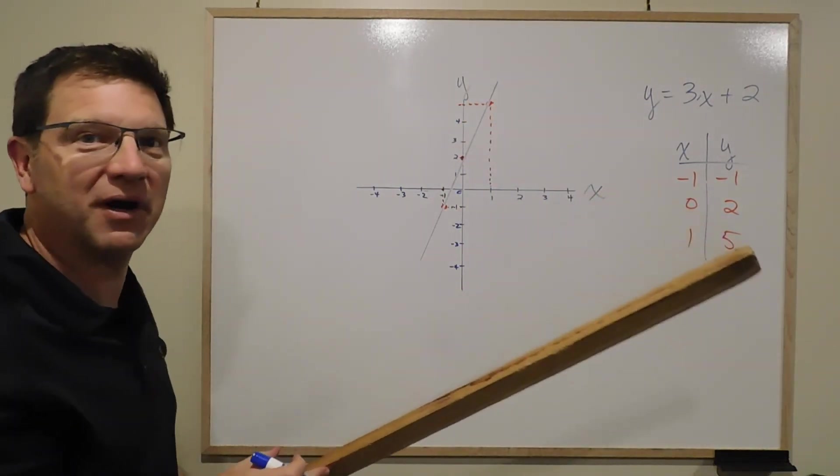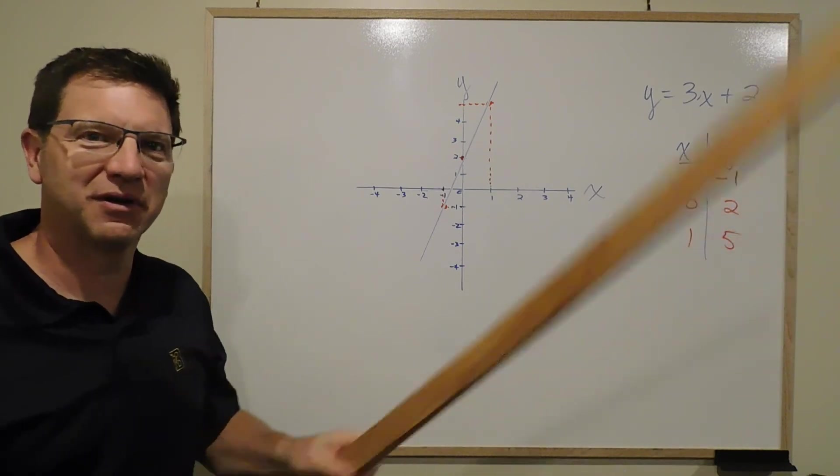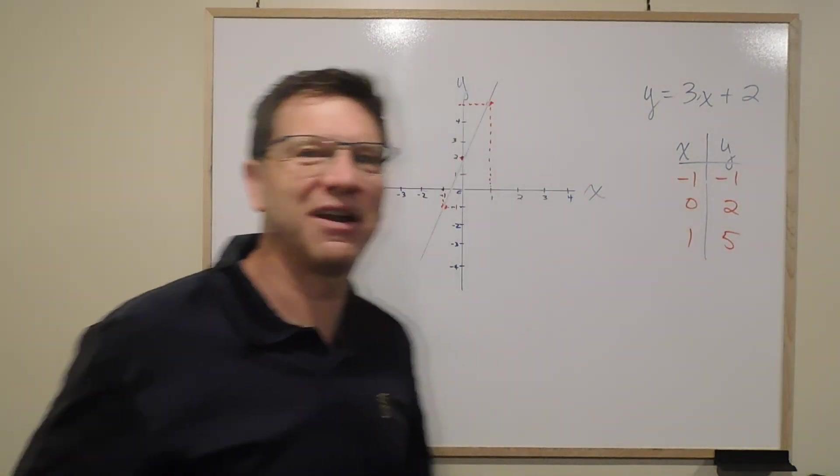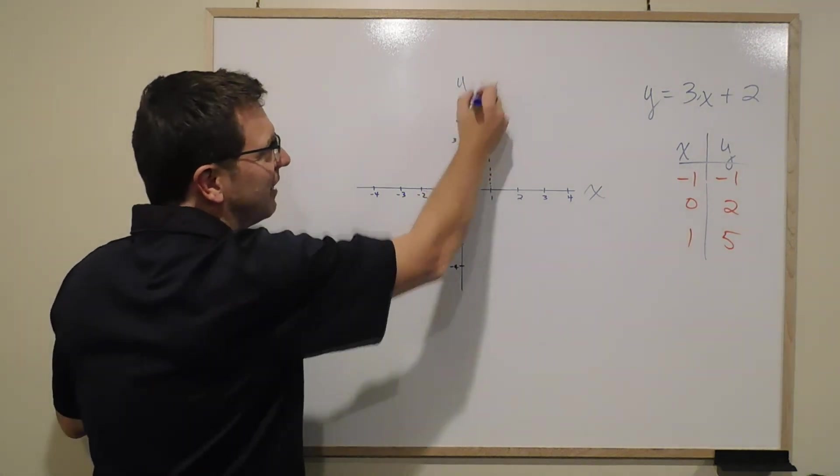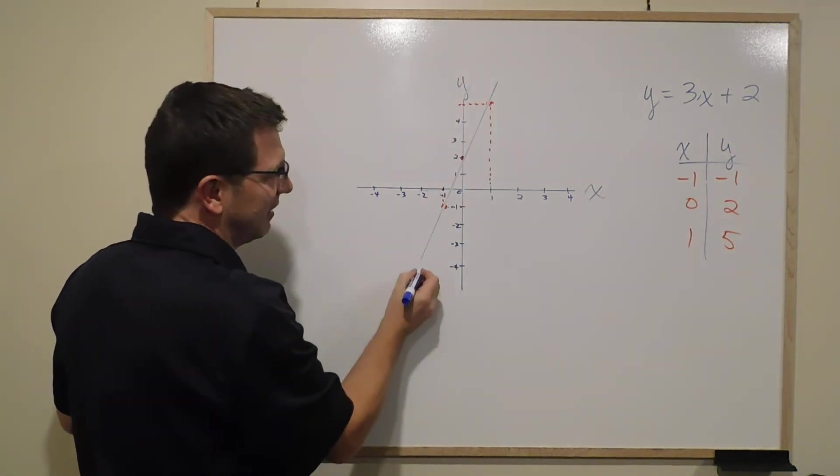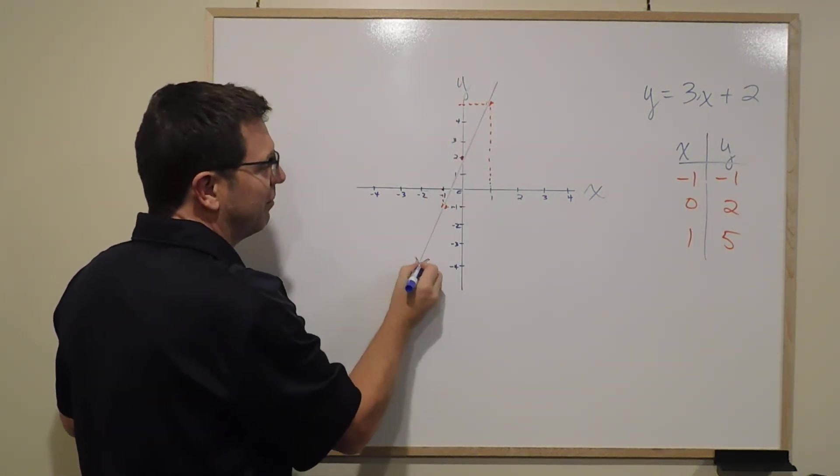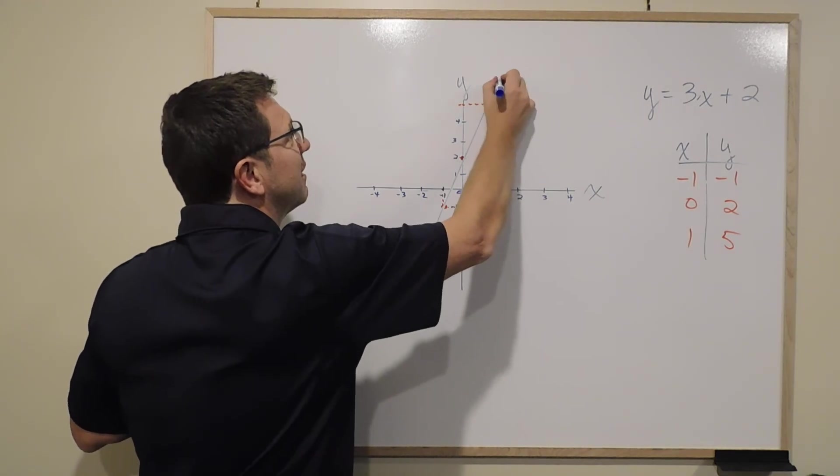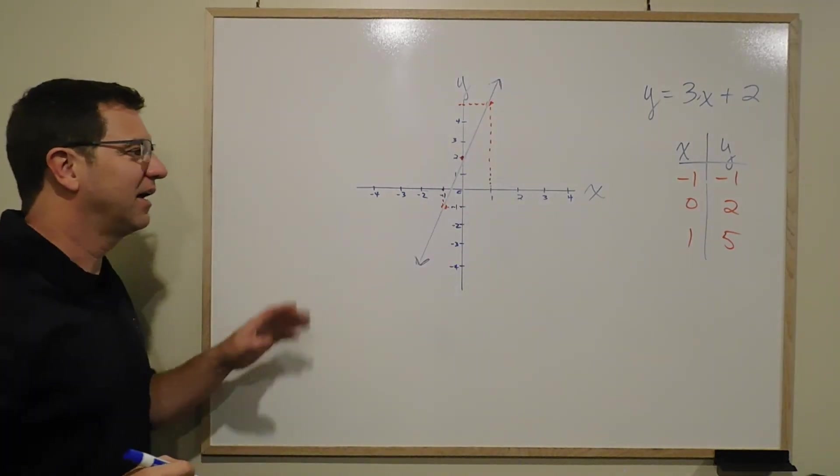Why is my ruler not perfect? To be honest, I left my ruler upstairs so I've got a stick instead. But I line it up and see it's a straight line, so I've done it correctly. I put arrows on the end. I've got a straight line and I've built a graph.